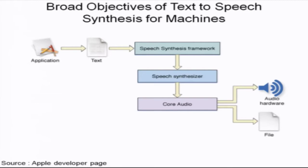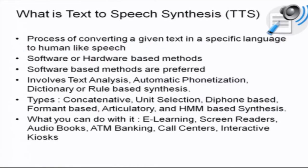The information is either available as text or needs to be converted to text. This text is fed into the speech synthesis framework, which does some initial processing — for example, smoothing on text. It then plugs into a speech synthesizer, which is the heart of the text-to-speech system. The synthesizer output is piped to the core audio system of the cell phone or machine, using which you generate the required audio. The broad objective is therefore to convert text to speech.